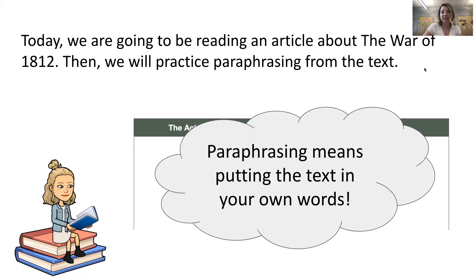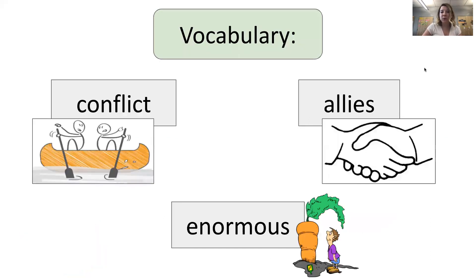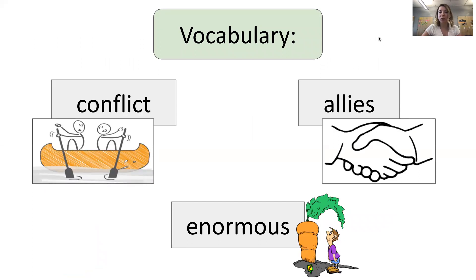Let's get started and practice this. Today, as we read our article, you might find some of these words which may be new to you. The first is the word conflict. Conflict is when two people or two groups of people are disagreeing about something. We also have the word allies. Allies are people who are working together, usually against another group. They have decided that they are going to be allies — working together against something or someone else.